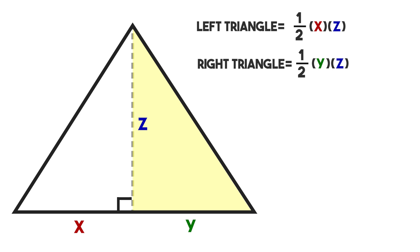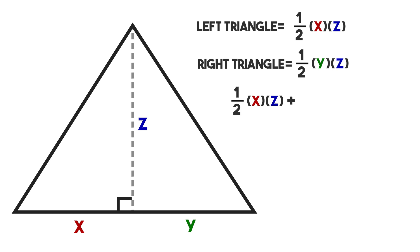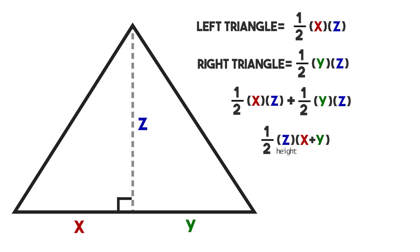The triangle we're looking for is the sum of both smaller right triangles. Algebraically, that's one half x times z plus one half y times z. Looking at this expression, it has two terms — do they have any common factors? They both have one half and they both have z, which means we can factor those out. We get one half z times the quantity x plus y. z is our height, and x plus y is the base of our original triangle. The same formula: one half base times height.